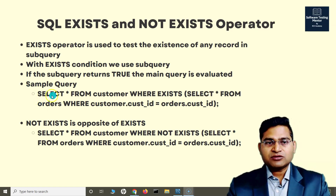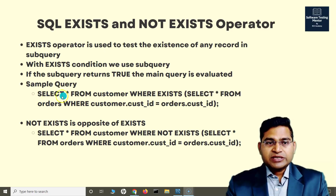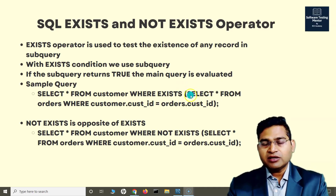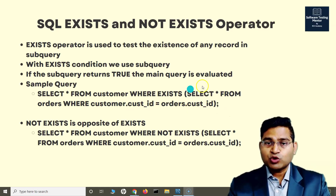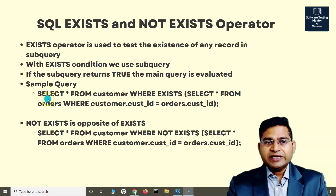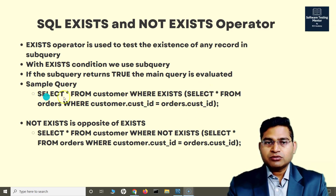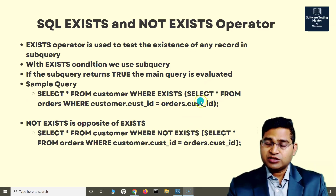A sample query looks like: SELECT * FROM customer WHERE EXISTS (SELECT * FROM orders WHERE customer.customer_ID = orders.customer_ID). So SELECT * FROM customer is the main query, and the subquery inside the brackets checks for matching records in the orders table. If this subquery evaluates to true, then the main query will be executed and return all rows from the customer table.